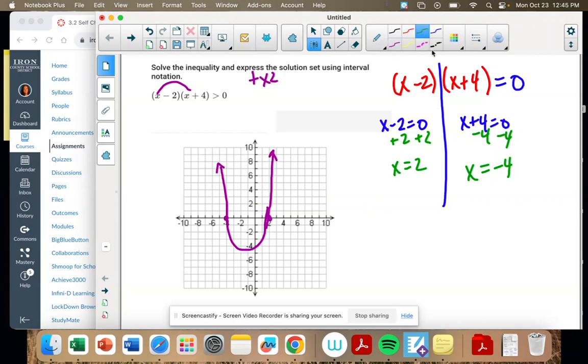So now we need to determine where our interval is. Oh, and I already messed up. Look, because the inequality does not have the line under, that means that it is a dashed line on the graph.